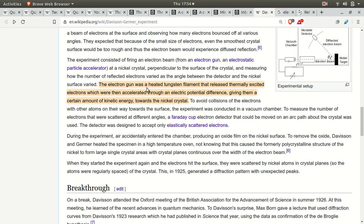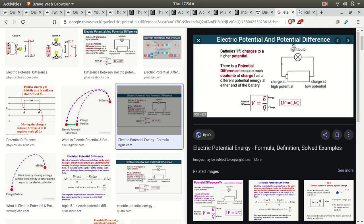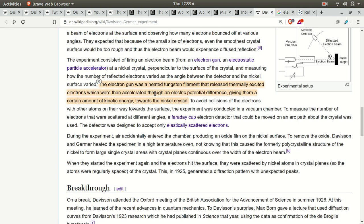The electron gun was a heated tungsten filament that released thermally excited electrons, which were then accelerated through an electric potential difference, giving them a certain amount of kinetic energy towards nickel crystal. That's a fucking light bulb, dude. That is a fucking light bulb. The electron gun is a heated tungsten filament. That's a light bulb. So what's this electric potential difference thing? Electric potential and potential difference. Batteries lift charges to a higher potential. You remember doing this in school. You hook the wire of the one end of the battery up to your light bulb, and then you take the wire off the other end of the light bulb and hook it up to the negative end of the battery, and the light bulb lights up. That's it. That's all they're doing.